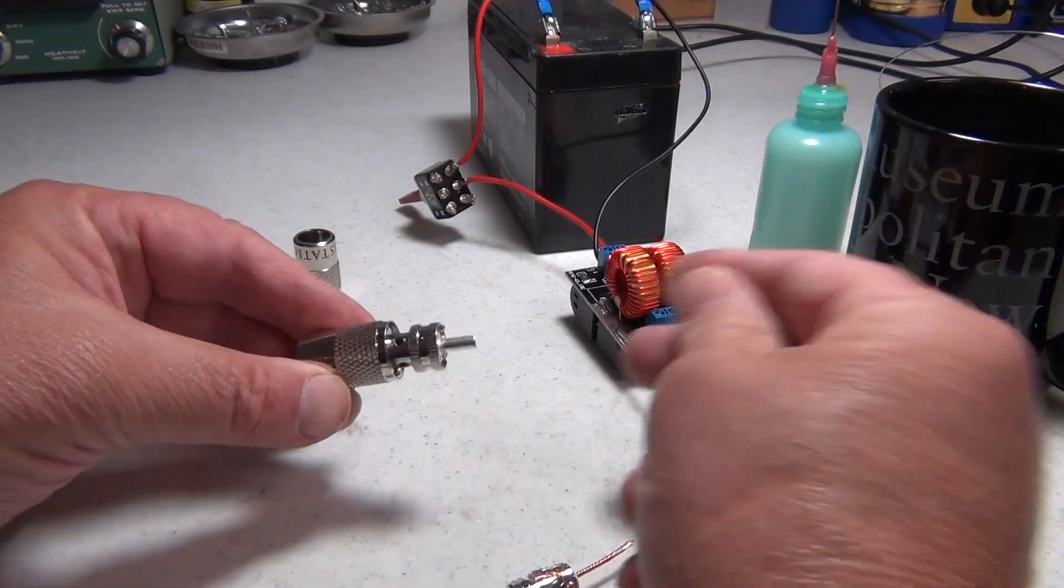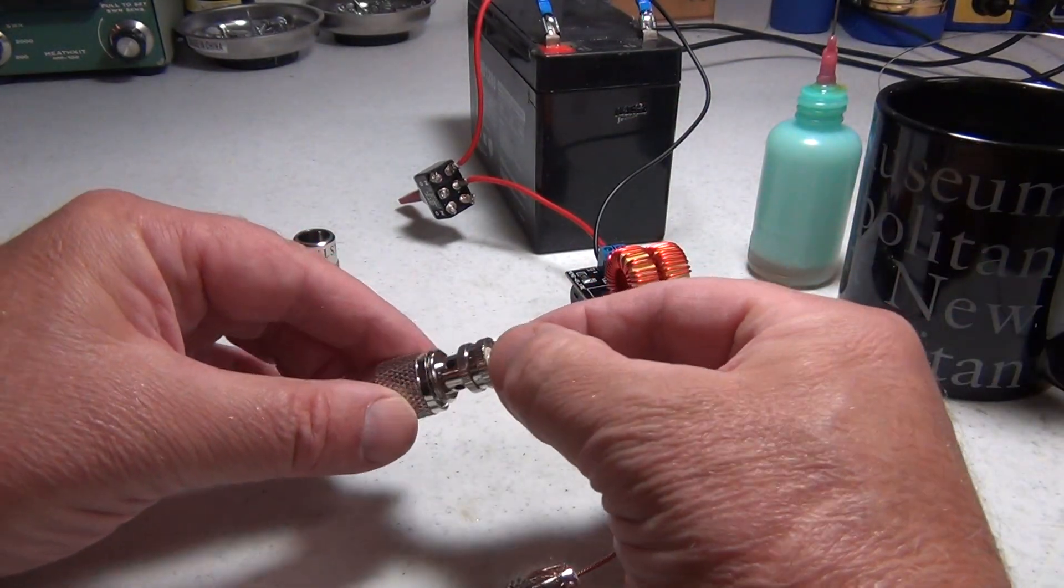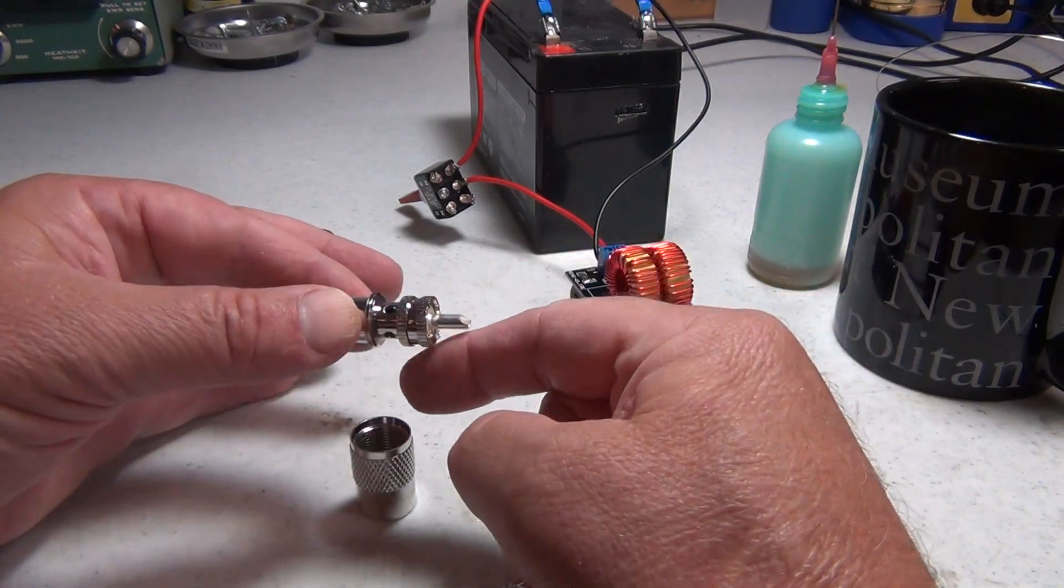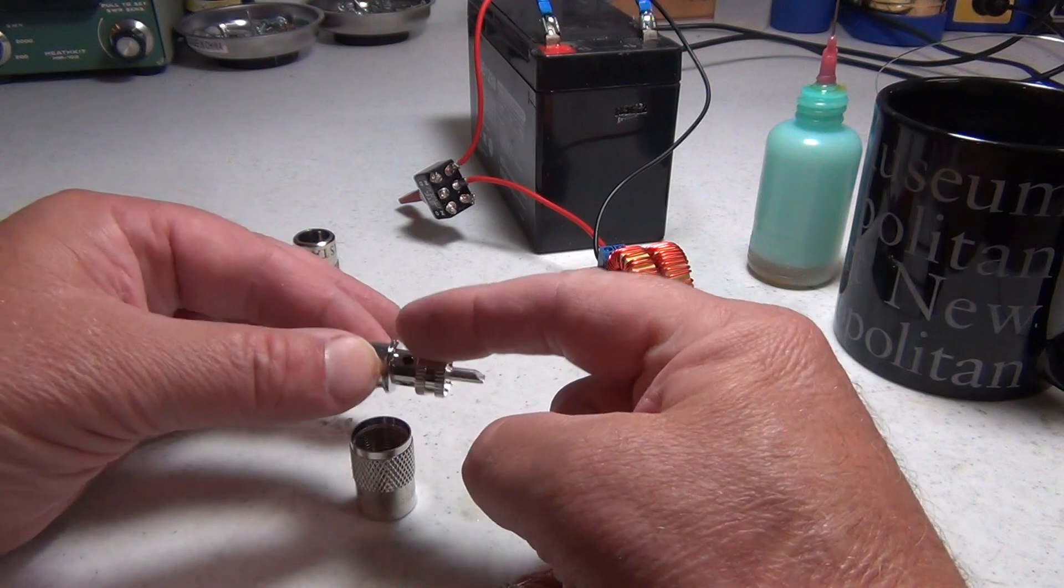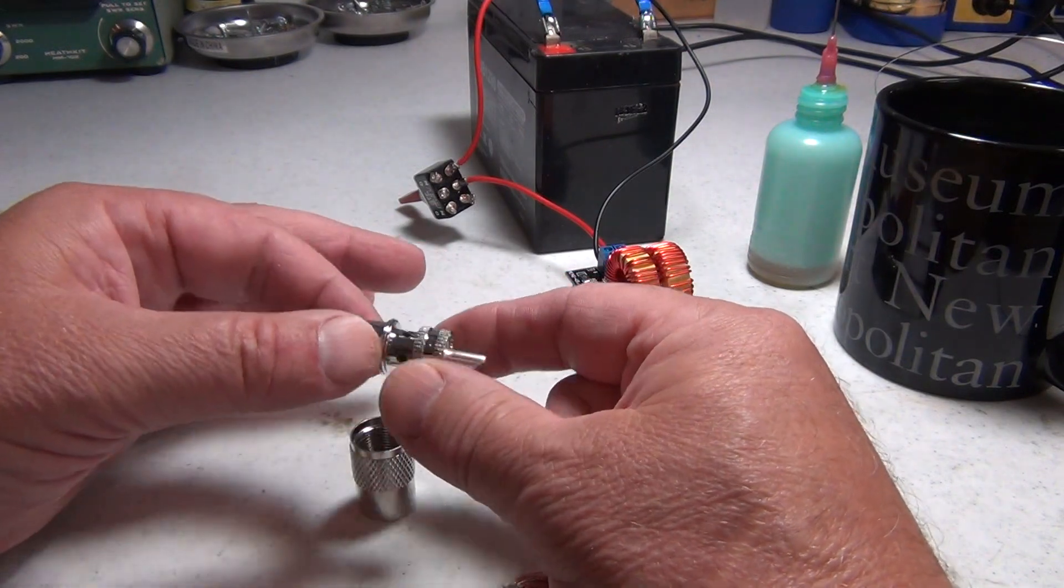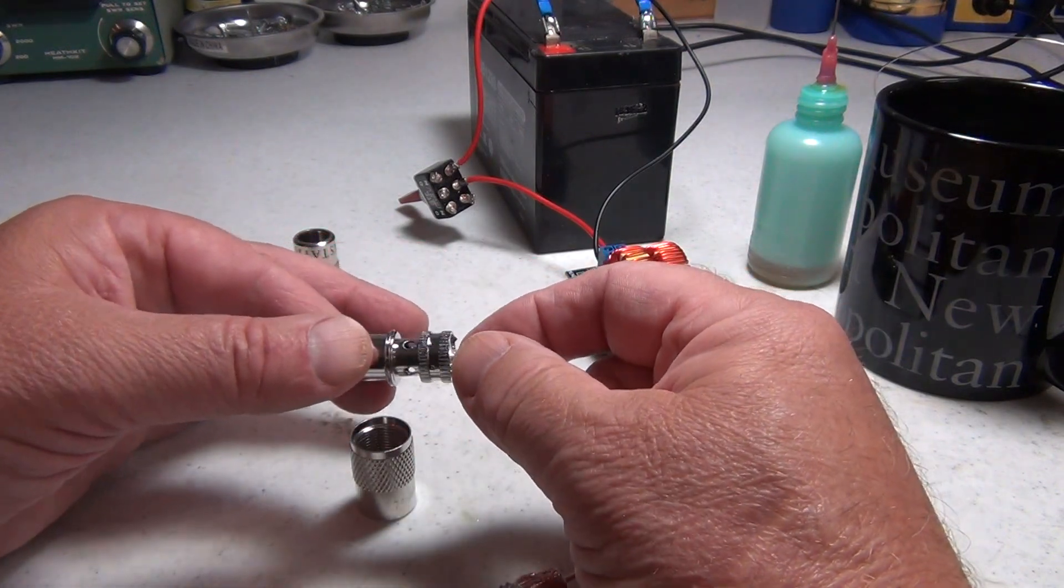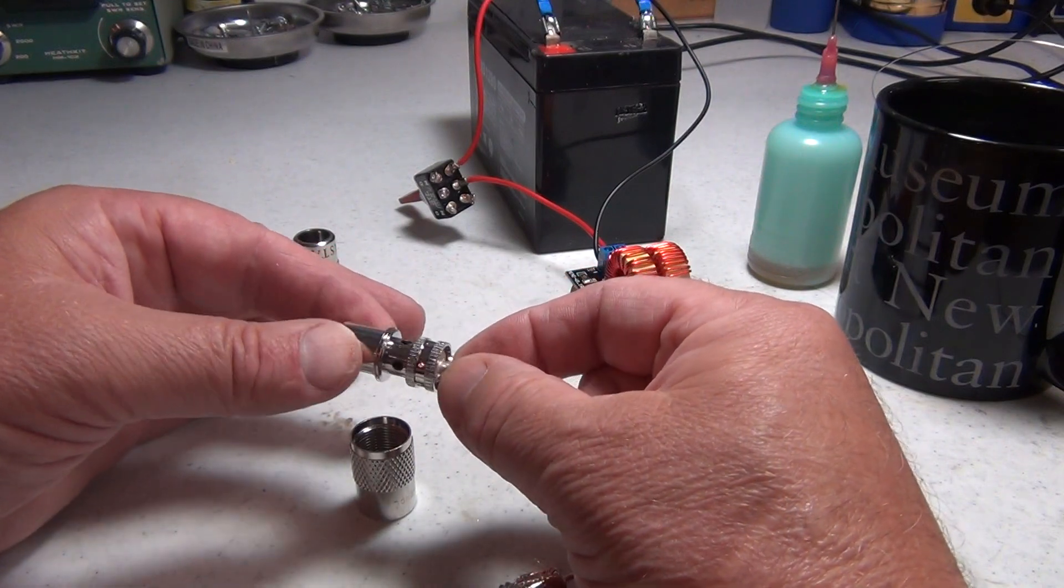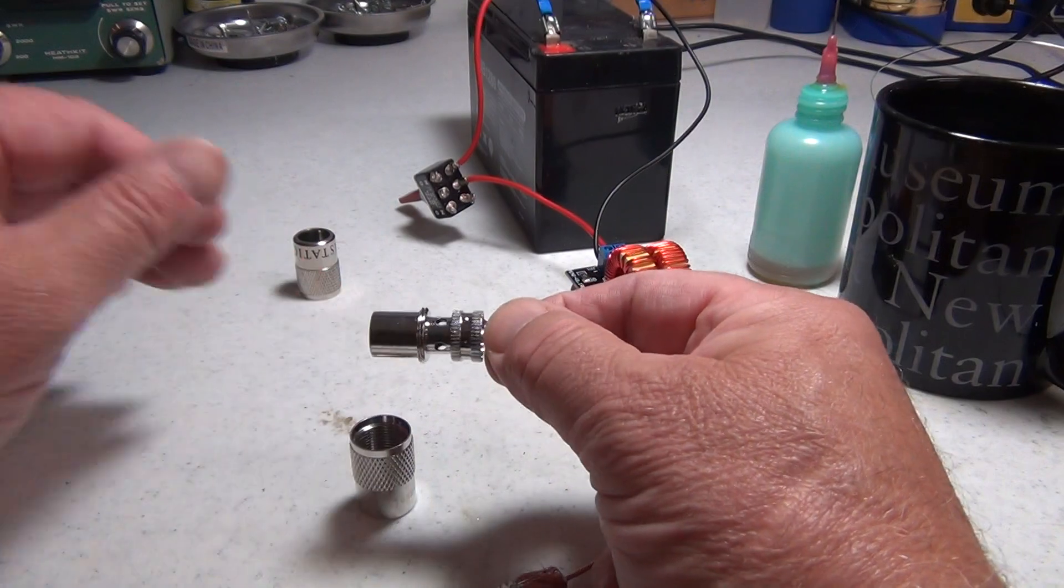Everybody knows what a PL-259 looks like. The issue really isn't the center conductor—it's various ways of getting the braid soldered to the connector. I've seen a few on YouTube, but I ran across this idea and it seems to work pretty well for me.